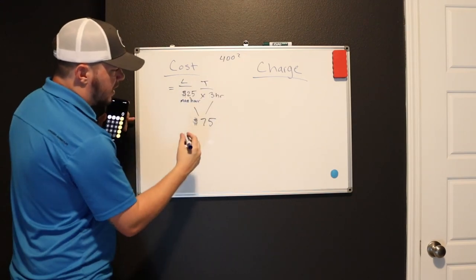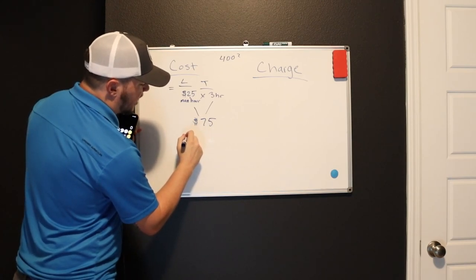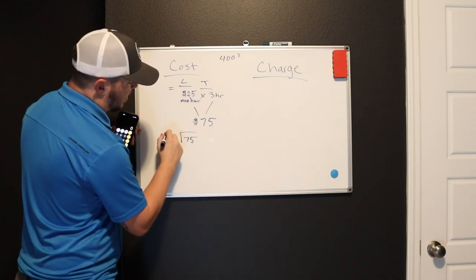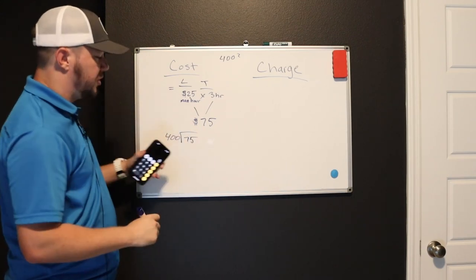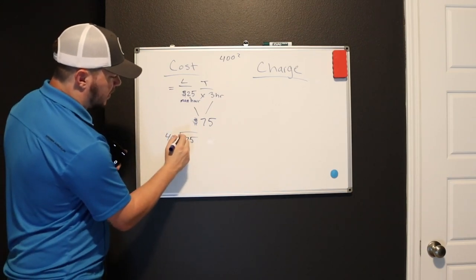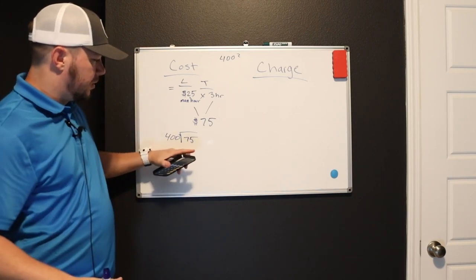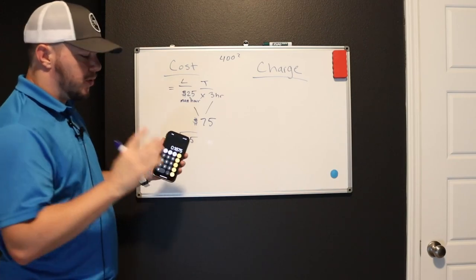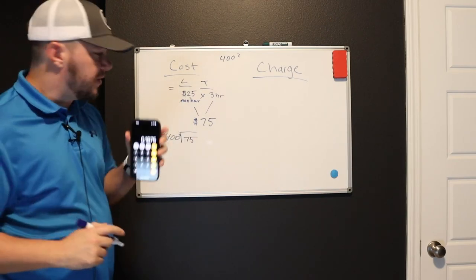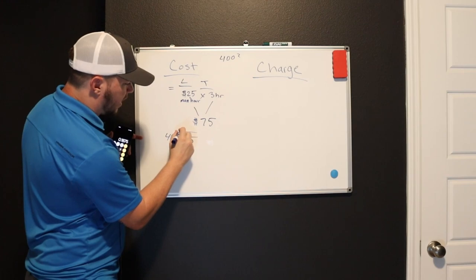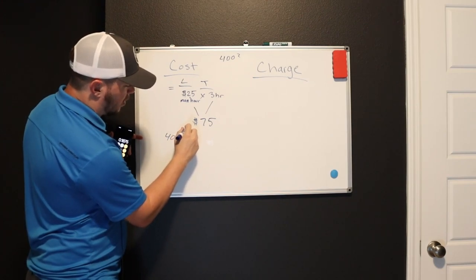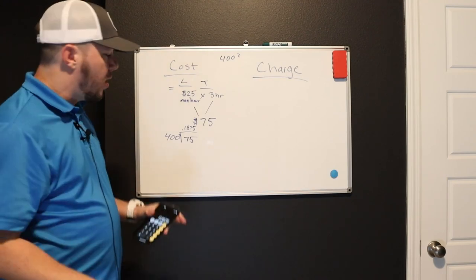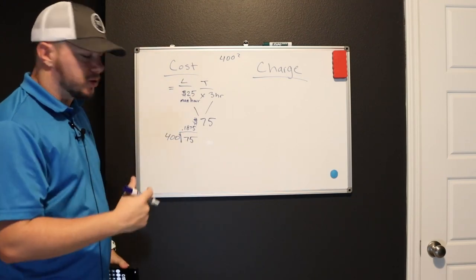So what you're going to do is you're going to break out your handy dandy calculator here. You're going to take your square footage, right? And you're going to divide it into that 75. So you're going to do 75 divided by 400 is going to get you. That's 400 square feet. That's your room size. This is your labor cost. So 75 divided by 400, it's going to give you a decimal. That's 0.1875. So that's how much it's going to cost you per square foot on labor on those walls for a 400 square foot room.